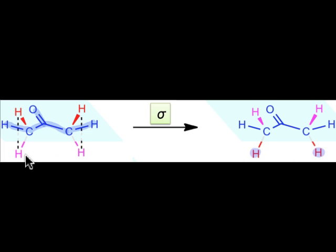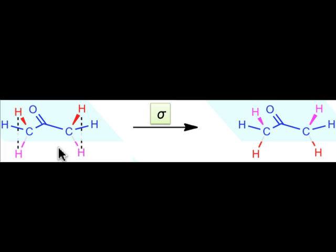Atoms that begin below the plane, like these magenta atoms, move above the plane upon application of the reflection operation. We can see that the new molecule generated upon application of the reflection operation is identical to the original — except for the coloring applied to show which atoms are above and below the plane. Because the molecule is unchanged upon application of the reflection operation, we say that acetone possesses reflection symmetry.